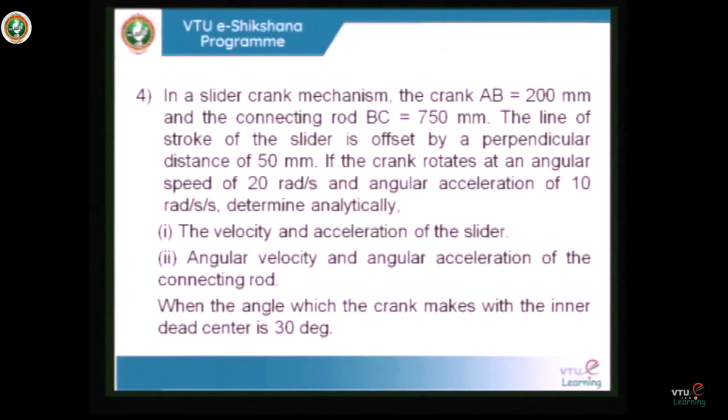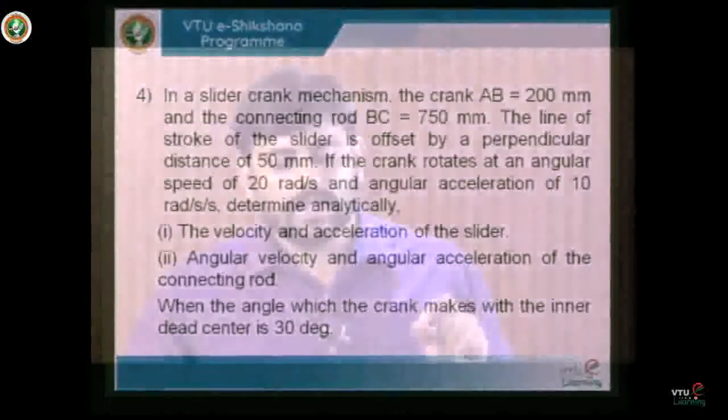If you carefully observe the problem, we have a slider crank mechanism with the slider not in line with the x-axis — it has an offset perpendicular distance of 50 mm to the x-axis. Listing out the given data: crank length a = 200 mm, connecting rod length b = 750 mm, angular velocity ω₁ = 20 rad/s, angular acceleration α₁ = 10 rad/s², and eccentricity E = 50 mm.